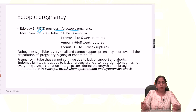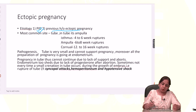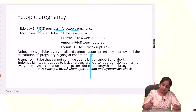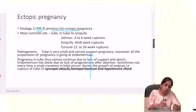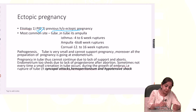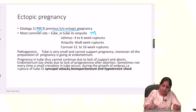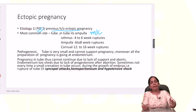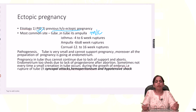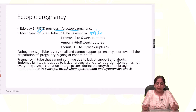The most common ectopic pregnancy is in the ampulla, because fertilization occurs in the ampulla in tubal pregnancy. Due to the inflammatory condition — PID — the embryo has no movement from there, so the pregnancy continues in the ampulla.